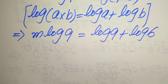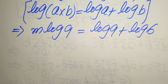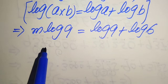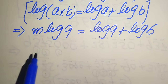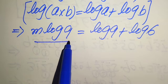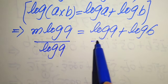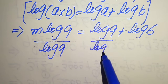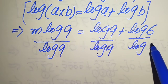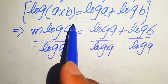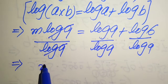Since we are solving for m, we need to eliminate log 9 from the left-hand side. We divide both sides by log 9, and log 9 on the left cancels with log 9 in the denominator, giving us m equals 1 plus log 6 over log 9.